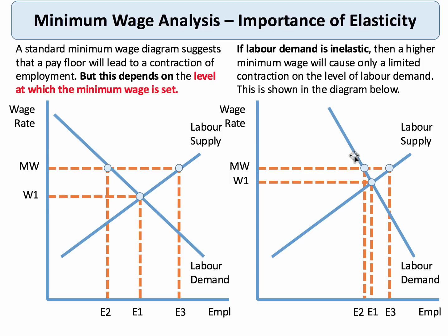Now, I've drawn my labour demand curve as inelastic. The minimum wage is above the equilibrium; more people want to work — E1 to E3. But notice here, if the labour demand curve is inelastic, we see a smaller fall in employment. And that's going to have a consequence for the total earnings of workers at the minimum wage — total earnings will be that rectangle area. The key analysis point is that the elasticity of labour demand affects the extent to which employment falls if we impose a minimum wage above the free market wage.